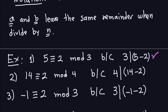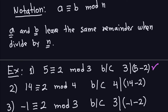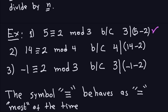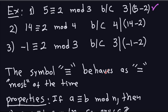The reason those statements are true follows from the definition: A congruent to B modulo N means the modulus divides the difference of the numbers. Now let's look at some properties. The congruence symbol behaves as an equal sign most of the time, but there are some properties of equality that are not shared with congruence. Let's look at the properties that are true for both equality and congruence.